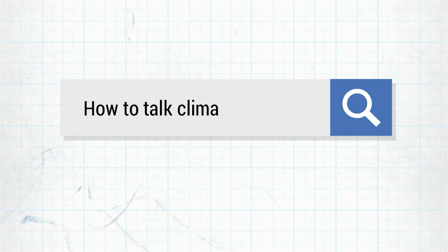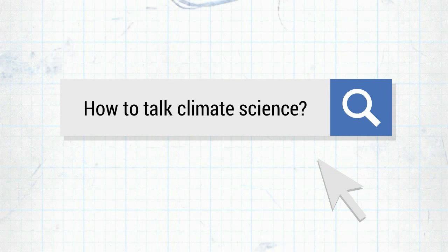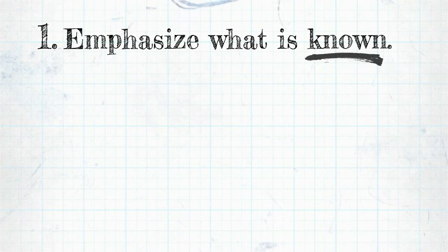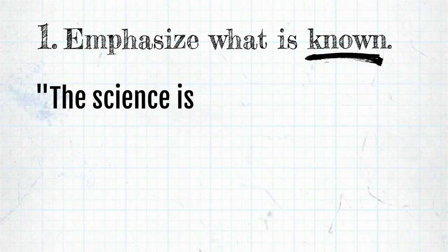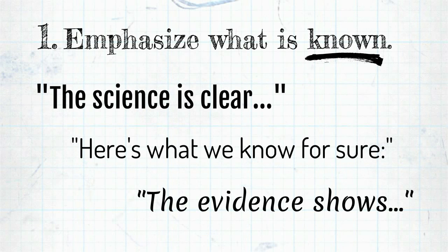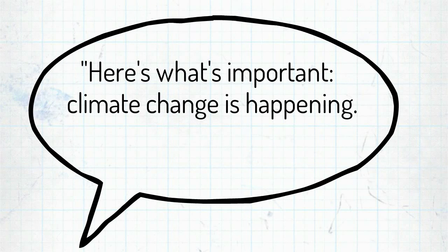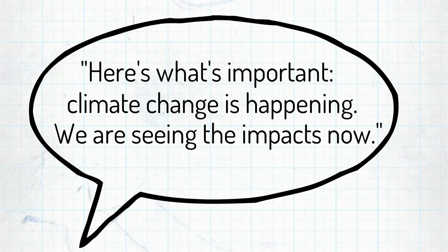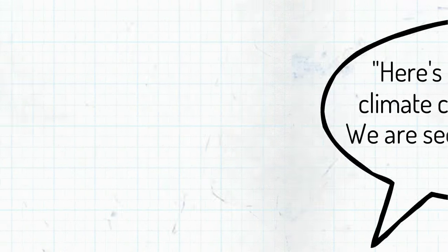So what should a scientist do? Here are four simple messaging guidelines. First, emphasize what is known, not all the unknowns. A few simple phrases can call attention to your key findings. And remember, many people need to hear the climate science basics too — basics that may seem obvious or simplistic to an expert. These help put new information into context.